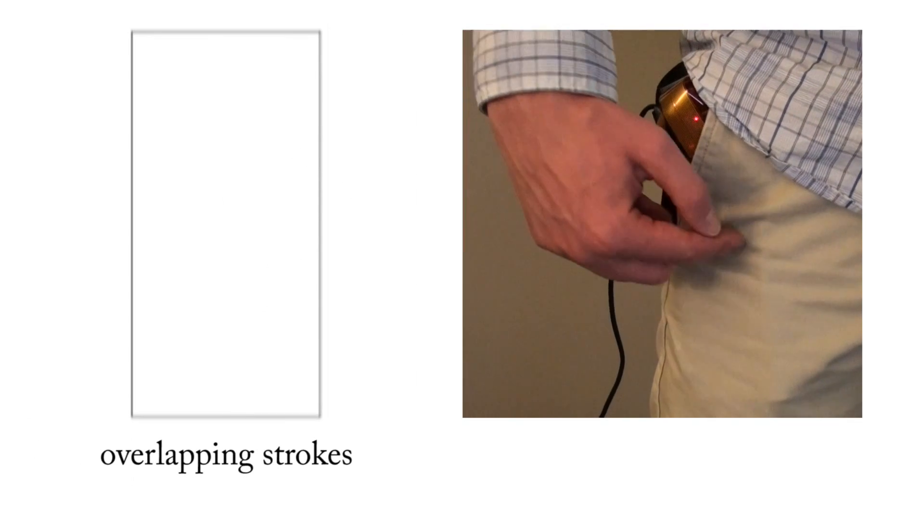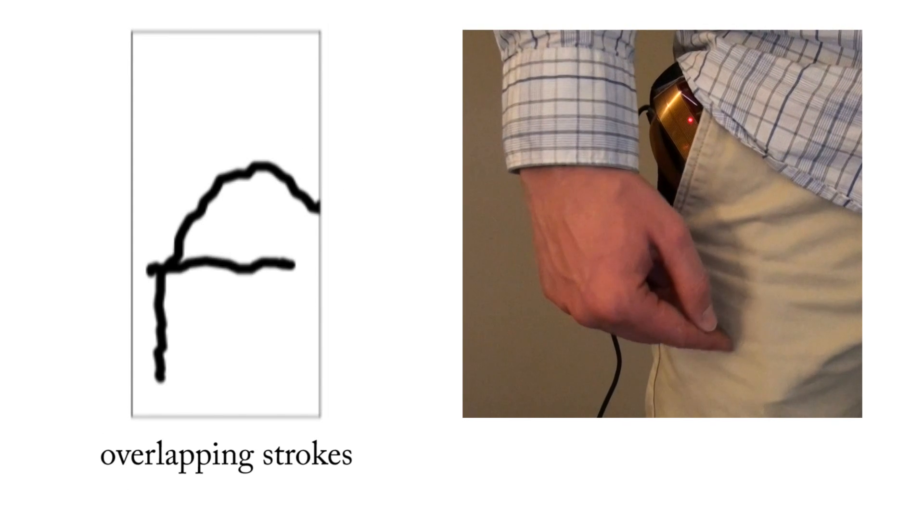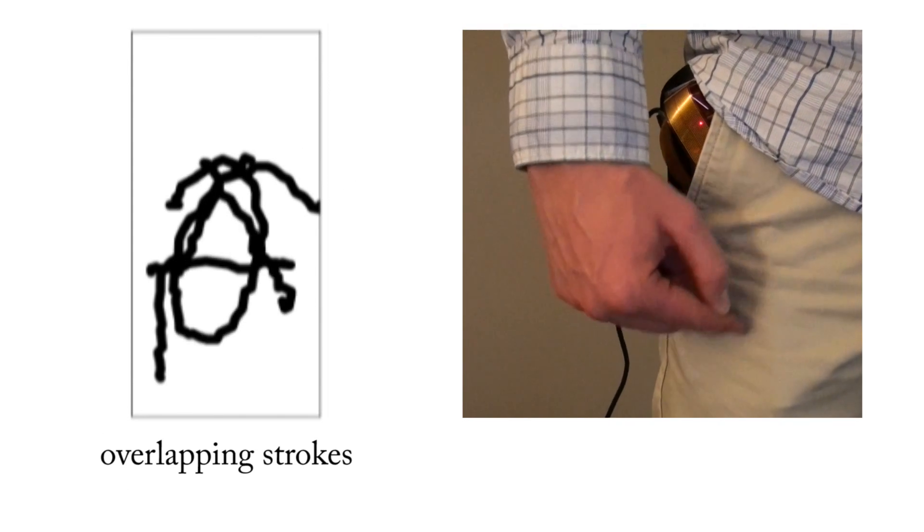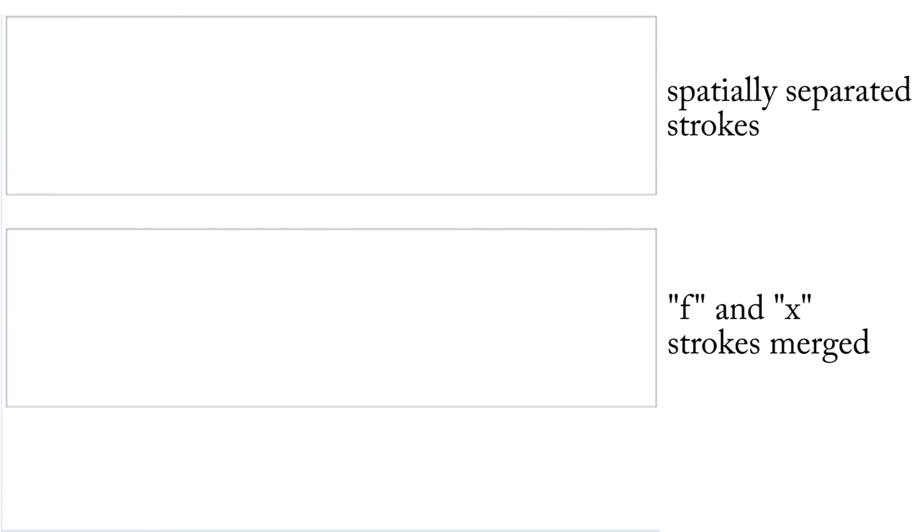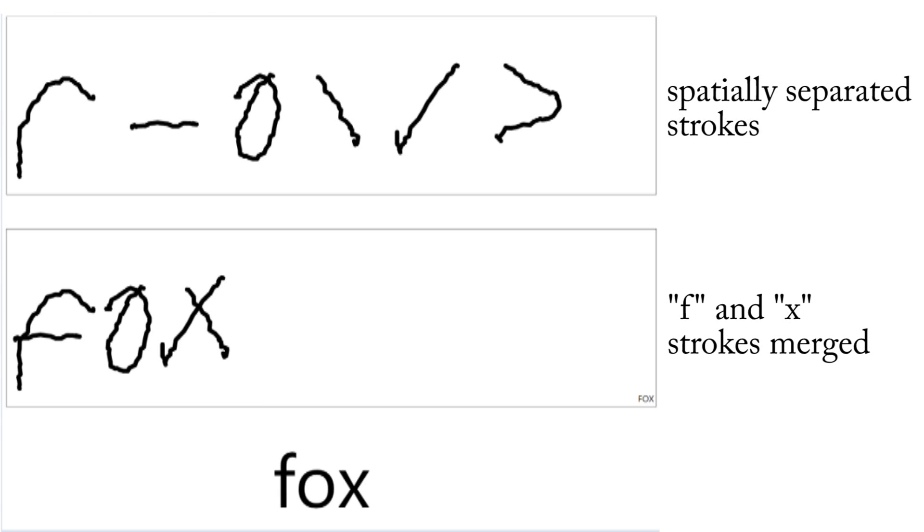To enable text entry, one needs to account for the fact that the user will overlay strokes on top of each other. Once spatially segregated, some strokes need to be merged to form the intended letter, as in the multi-stroke letters such as F, X, or T.